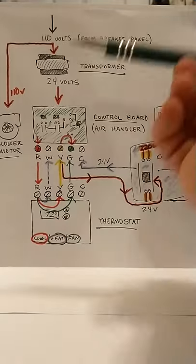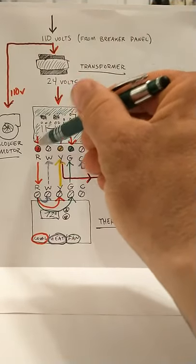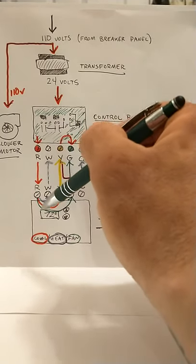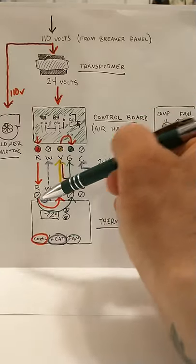Now the flow path here, you always have 24 volts from your R terminal at your air handler running up to the R terminal at your thermostat. So that red wire will always have 24 volts to it up to this point right here.